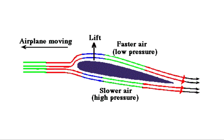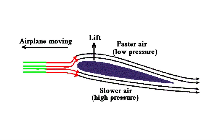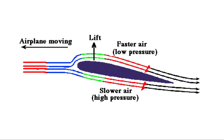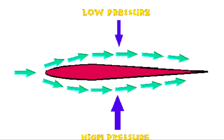According to a theory, air moving on the upper surface moves at a faster velocity than the air on the lower surface. As a result, we have lower pressure on the upper surface of the wing and higher pressure on the lower surface. Due to this pressure difference, lift is generated on the wing.